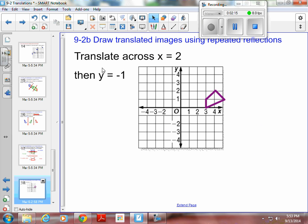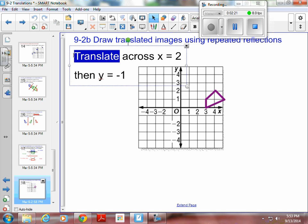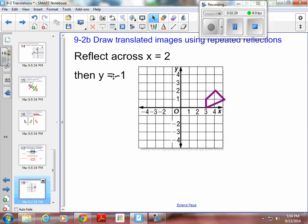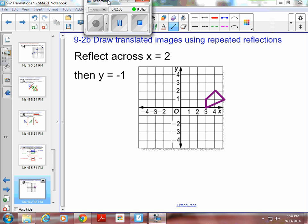And then the last thing, what if I reflect across X equals 2, and that's not really translate, it's going to be reflect, and then I reflect it across Y equals negative 1. So let me put those lines on here so we can take a peek at them.